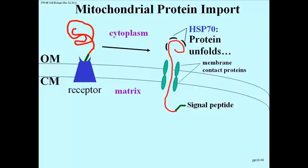The red protein that's going to end up inside the mitochondrion is extruded through what is essentially a hydrophilic pore made up of membrane contact proteins that hold the inner and outer membrane together to allow this transport to occur.